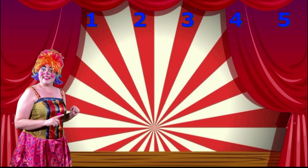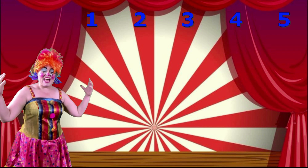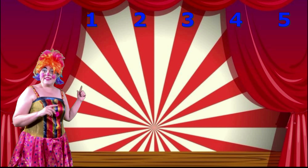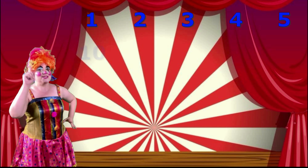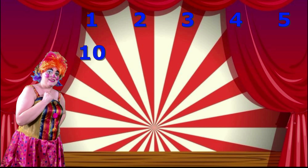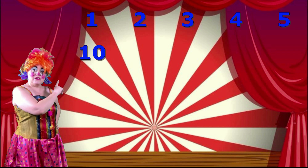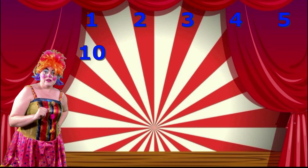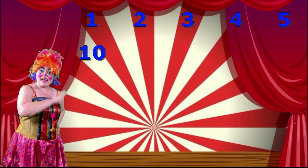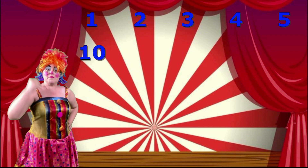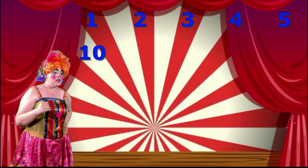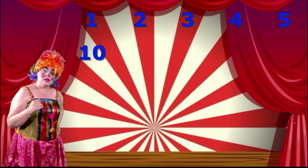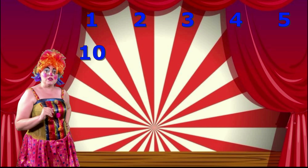And then, underneath each one, write the number that is 10 times larger. So, underneath the number 1, you will write the number 10, because we've already worked that out! Now, right underneath 1, 2, 3, 4, and 5 — the number that is 10 times larger than each one! Now, really good!